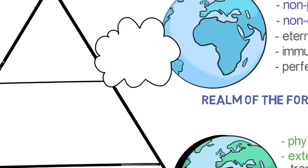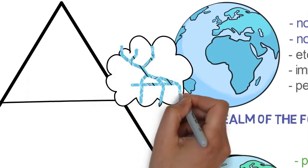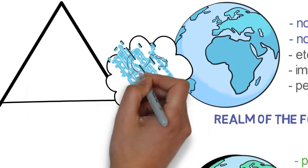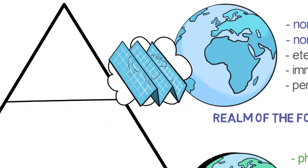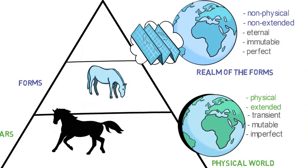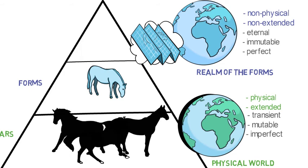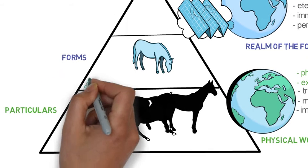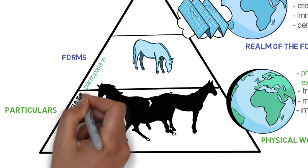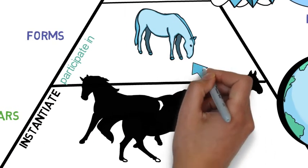Each form acts like a blueprint or an archetype for the particulars that resemble it or correspond to it in the world around us. Plato said, in itself each is one, but they present themselves everywhere, so they're in everything. Plato claimed that particulars participate in or instantiate the forms, that the form is somehow present within the particular which possesses it.